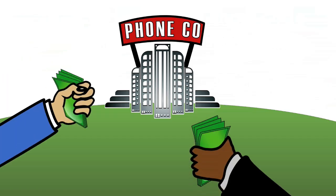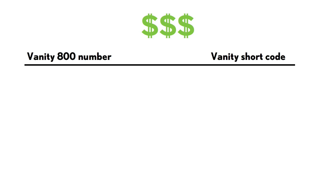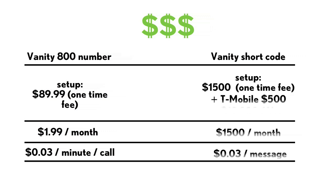How much money does the phone company actually make from a shortcode text message? Let's compare it to an 800 number. To get a vanity 800 number — one that spells what you want it to say — you pay a setup fee of $89.99, $1.99 a month, and $0.03 a minute per call. To get a vanity shortcode, you pay $1,500 as a one-time setup fee, $500 to connect to T-Mobile (connecting to everyone else is free), and $12,000 a year.